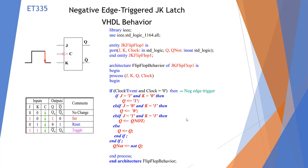Here we have a negative edge triggered JK latch — the triangle and bubble indicate negative edge. We add the clock statement: clock'event and clock equals 0, meaning it went from 1 to 0. J and K work like SR: J=1 K=0 gives a set; J=0 K=1 gives a reset. If J=1 and K=1, we get a toggle — Q goes into Q_NOT. We need two end ifs. Q and Q_NOT are always opposite.